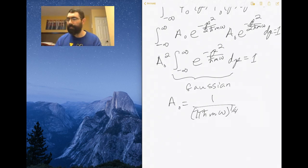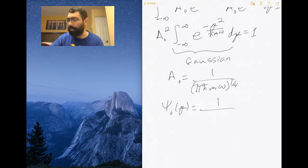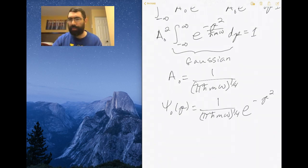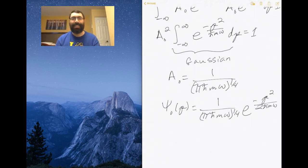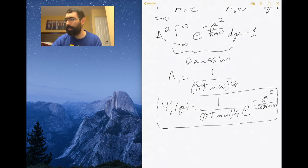Putting that back in, our ground state wave function in terms of momentum is one over (πℏmω) to the one-fourth power, times e to the minus p² over 2ℏmω. This is the exact same result we got in the previous exercise — the ground state wave function in momentum space, which is what we were working toward.